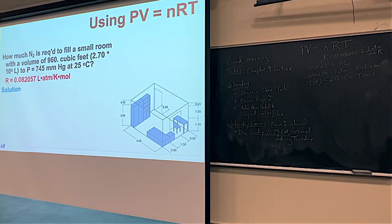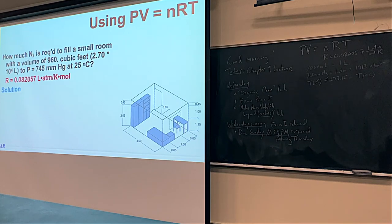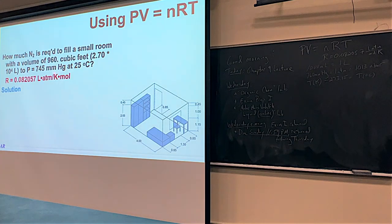Going back to the ideal gas law, they gave us the volume in liters. R, the useful one in this chapter, has units of liters-atmospheres per mole-Kelvin. Knowing those units, we'll have to convert our pressure in millimeters of mercury into atmospheres using the conversion: 760 mmHg equals one atmosphere. And because temperature has to be in Kelvin, we'll convert Celsius to Kelvin as well.